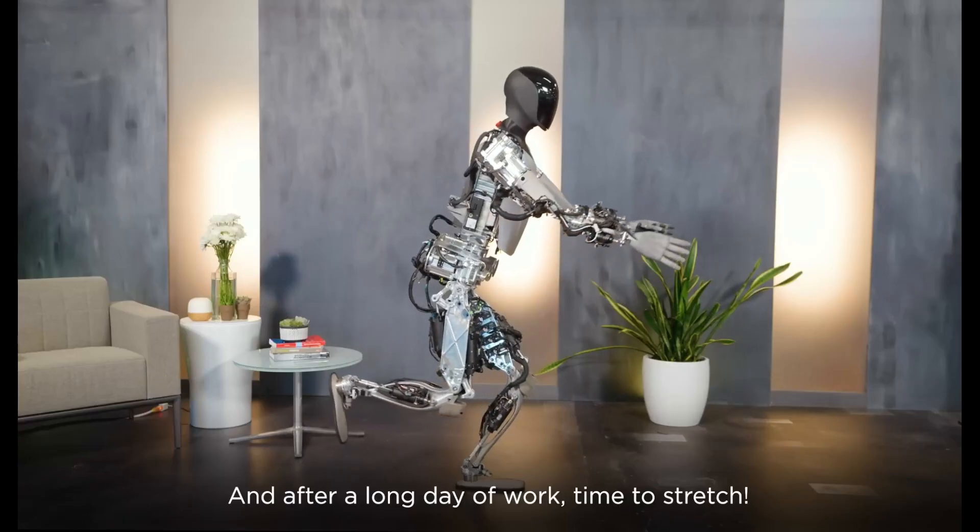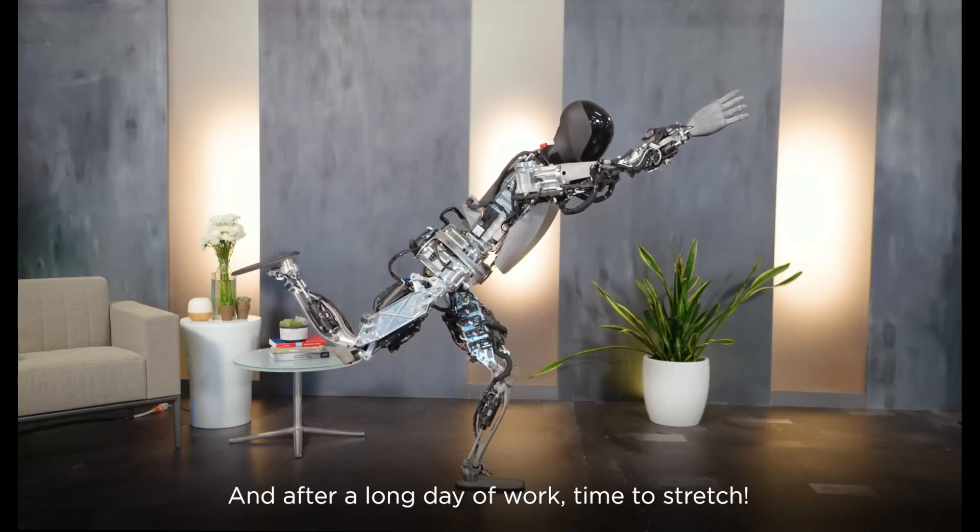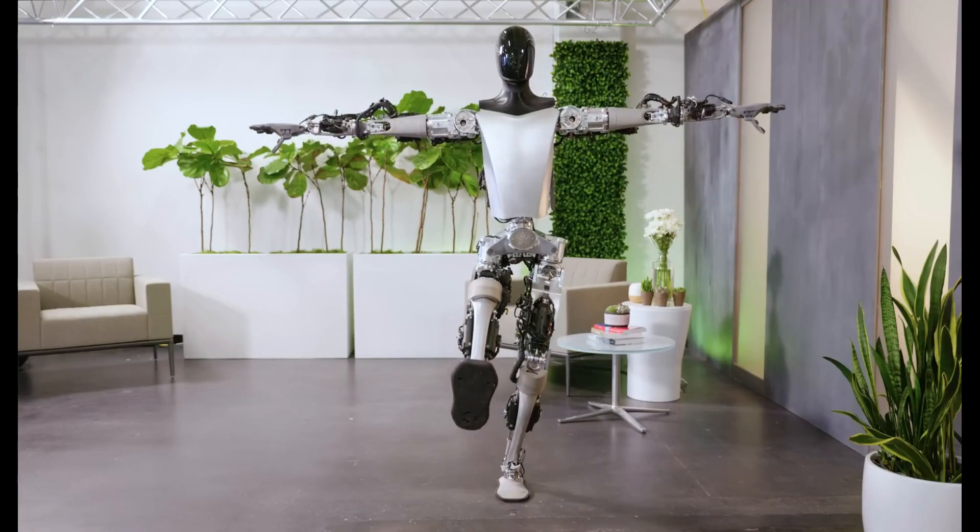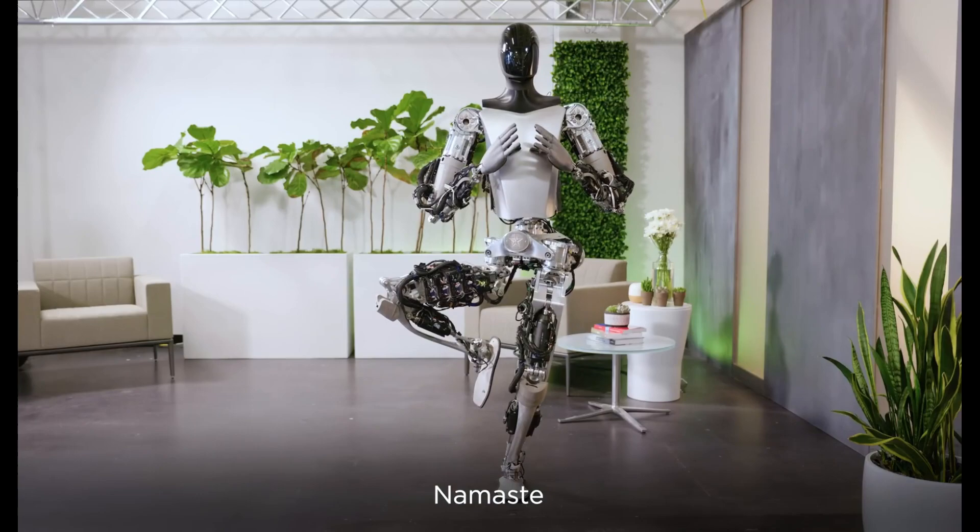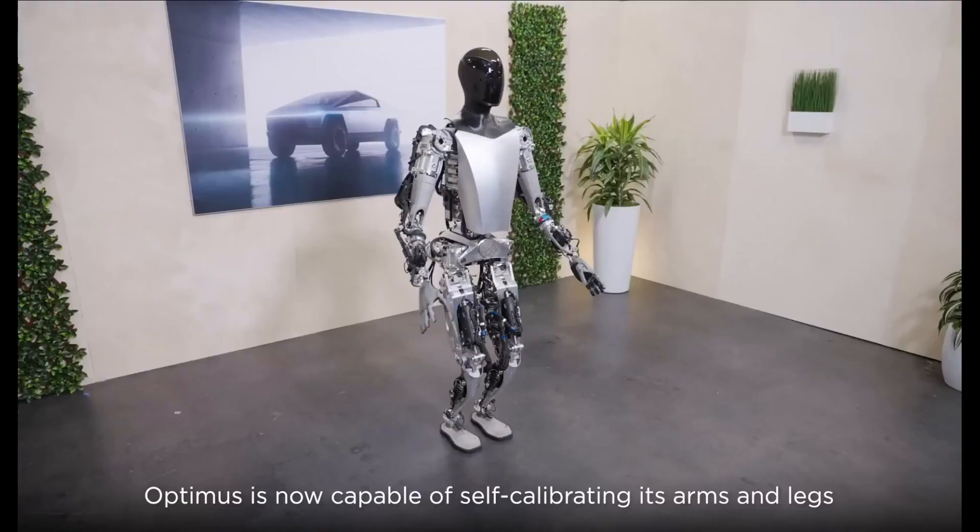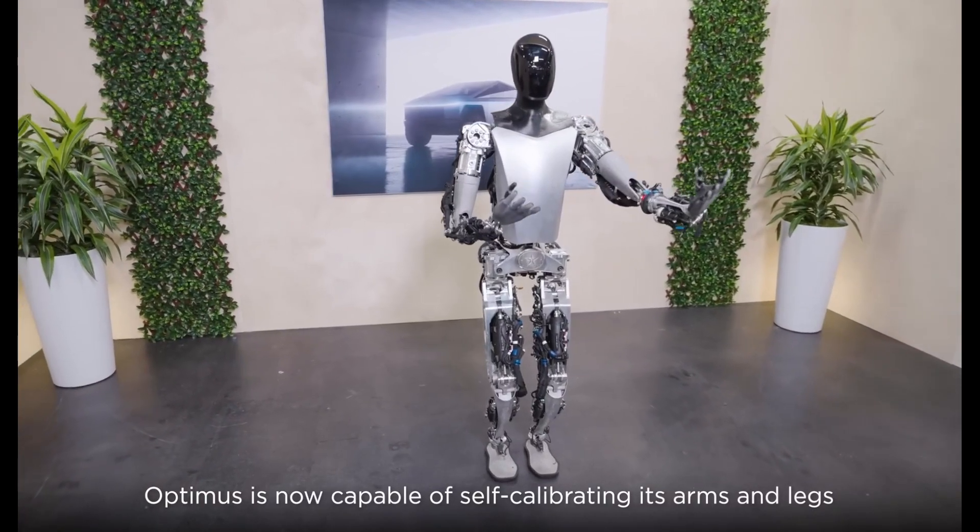Beyond demonstrating the robot's ability to perform simple and repetitive tasks, the update's video showcases Optimus's impressive balance, such as stretching on a single foot after a long day of work, and offering Tesla's namaste greetings to enthusiasts.